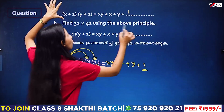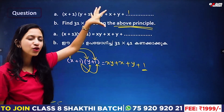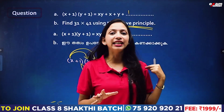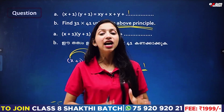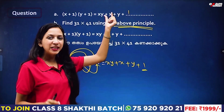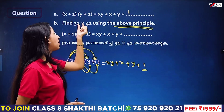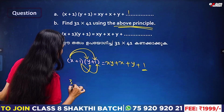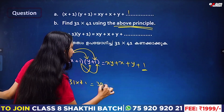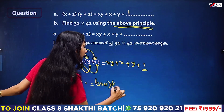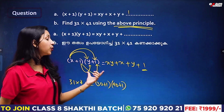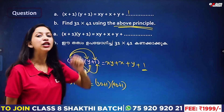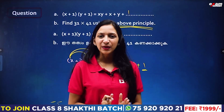In the case of the above principle, the identity is applied to calculate 31 into 41. We count 31 as 30 plus 1, and 41 as 40 plus 1. So 31 into 41 equals 30 plus 1 into 40 plus 1. We apply this identity principle to compute the product.